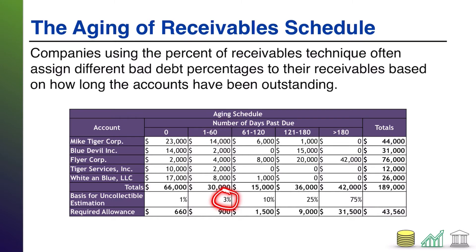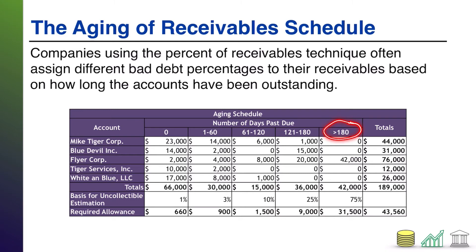In my one to 60 bucket, I'm going to say three percent of that probably won't get collected. As it gets higher: 10 percent. Higher more: 25 percent. Greater than 180 days — that's half a year that somebody hasn't paid me past due — I'm going to assume most of that, or in this case 75 percent, isn't going to get paid. This is the idea of an aging schedule: not a flat rate for all your AR, but rather a risk-based rate where the risk is determined by how past due the AR is.